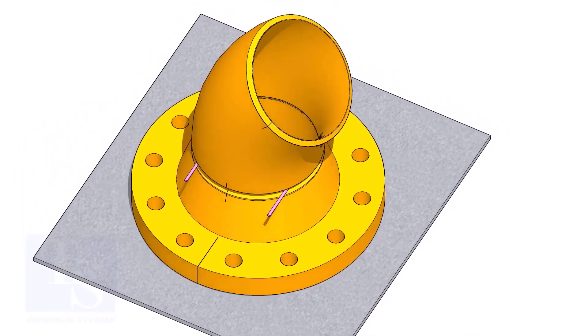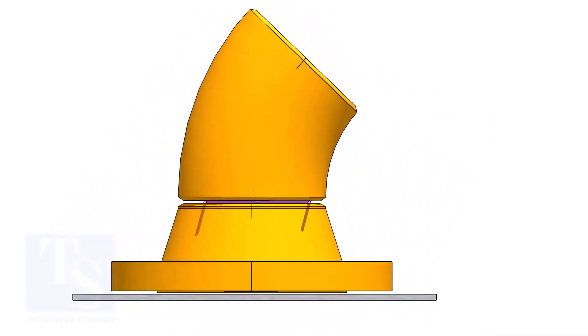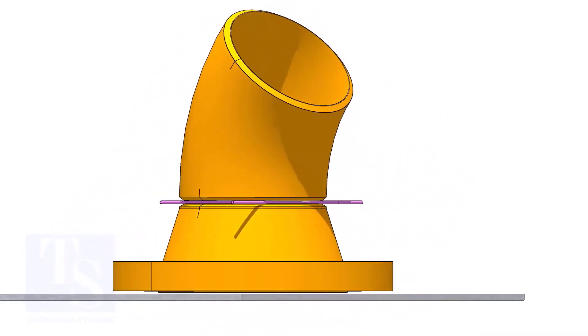Match the center lines of the elbow and the flange. Check the gap and the overlap. If correct, tack weld as per the shown sequence.